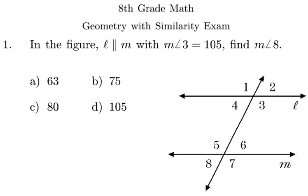Okay, this is the 8th grade geometry with similarity exam, and this is our first unit exam, and this is the first question on the review sheet. In the figure, L is parallel to M, with measure of angle 3 as 105. So the first thing I do is put 105 degrees where angle 3 is, and it says find the measure of angle 8.